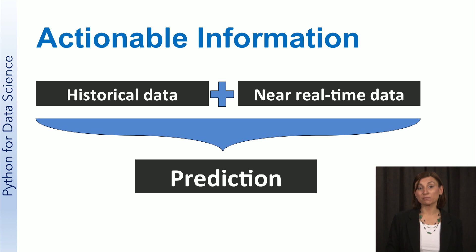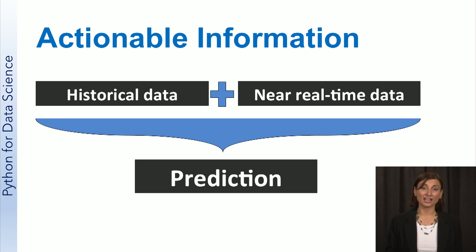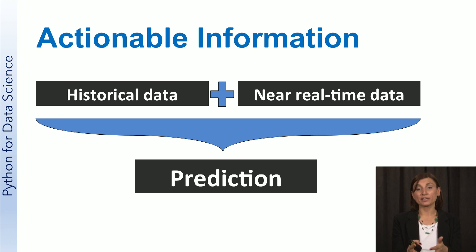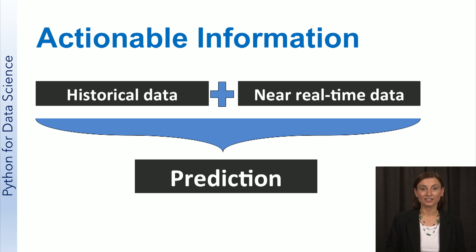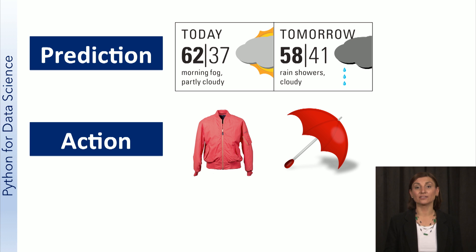As we have seen in the book marketing example, using data science and analysis of the past and current information, data science generates actions. This is not just an analysis of the past, but rather generation of actionable information for the future. This is what we call a prediction, and it is very similar to a weather forecast. When you decide what to wear based on the forecast for the day, you're taking action based on insight delivered to you.